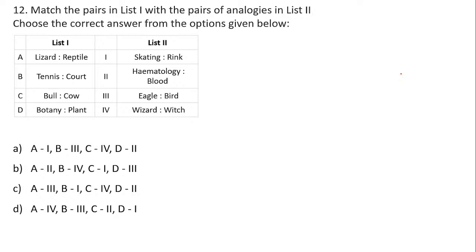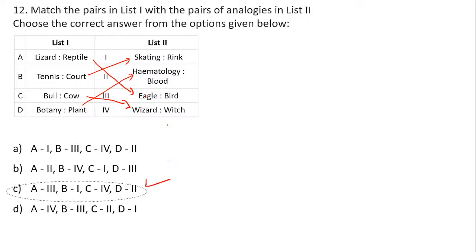What is lizard to reptile? What is eagle to eagle? Tennis is played in the court, skating is in the rink. Bull and cow are male and female. Wizard and witch are male and female. Botany is related to plant and hemoglobin is related to blood. So the answer is 3, 1, 4, 2 — option C is the right answer.